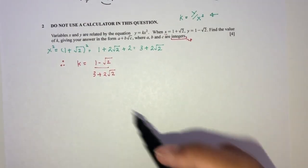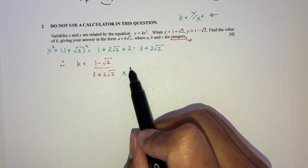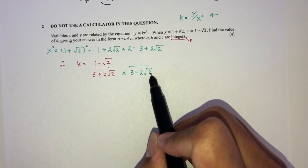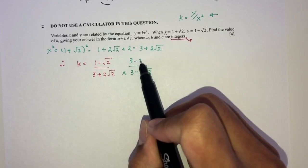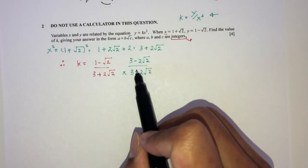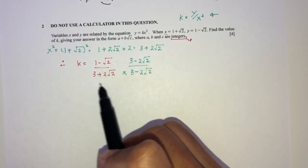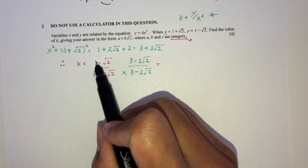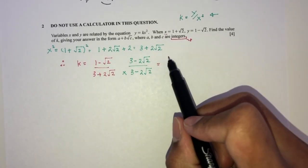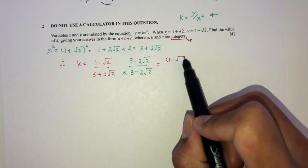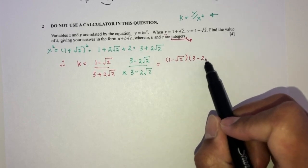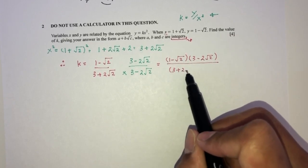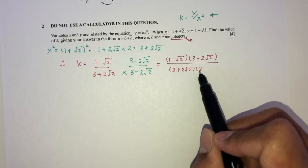We have seen this many times — we have to multiply the numerator and denominator by its conjugate. So change plus 2 root 2 to minus 2 root 2. We have to multiply top and bottom by the conjugate 3 minus 2 root 2. So on top you will have 1 minus root 2 times 3 minus 2 root 2, and on the base you will have 3 plus 2 root 2 times 3 minus 2 root 2.